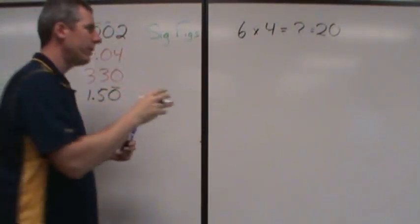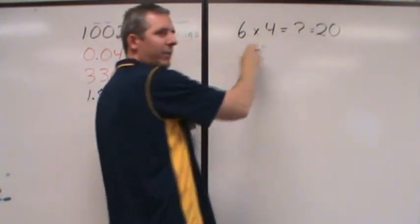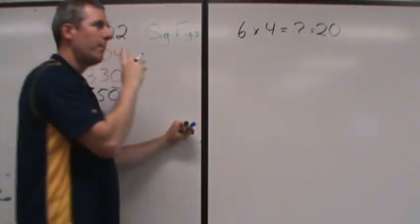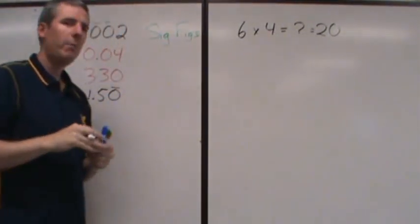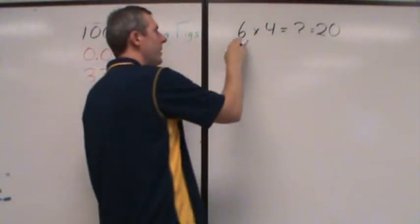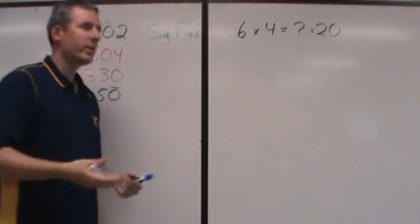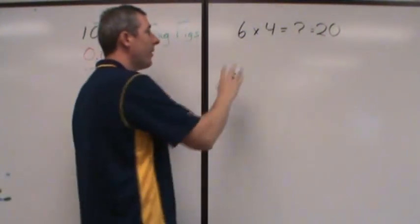When you're saying 6 times 4 in math, you mean the number six and the number four. But when you're doing sig figs, you're no longer talking about a numerical value, you're talking about a measurement. So when you say a measurement of 6, 6 centimeters, let's say by 4 centimeters, we're looking at an area.